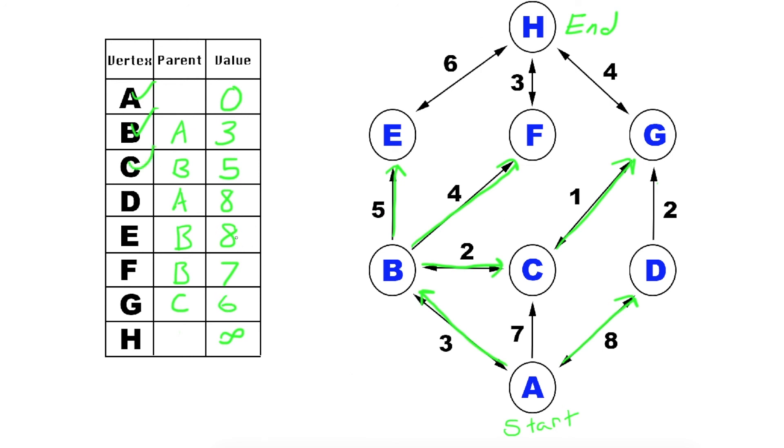The next smallest looks like G, 6. So we can't go down to D, because the arrow is only pointing up. But we can go up here to H. So we do 6 plus 4 is 10. So G is the parent. Get rid of infinity. And the new value is 10. There's nowhere else to go for G, and we mark it as visited.